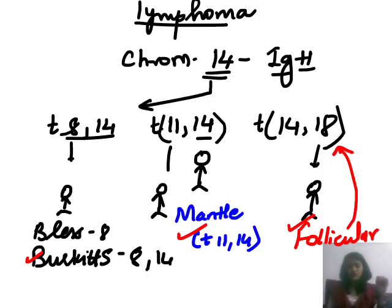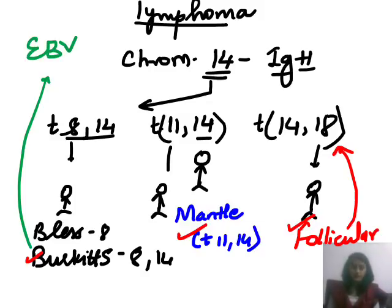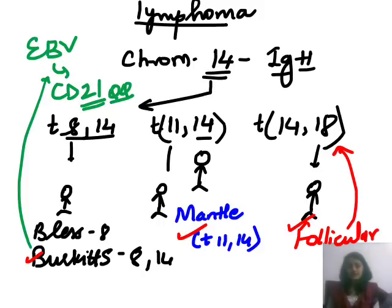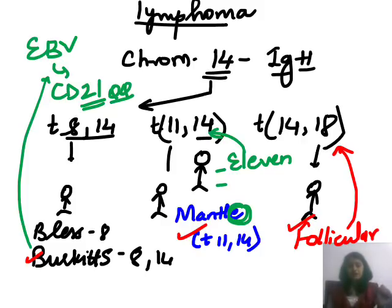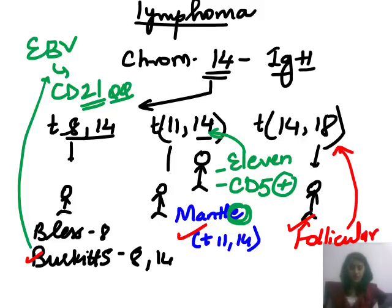Now for the CD markers: Burkitt's is associated with Epstein-Barr virus, whose receptor is CD21 — a frequently asked question. For mantle cell lymphoma, 'M' contains the letter 'E' which is the 5th alphabet, so it is CD5 positive. Remember that mantle cell lymphoma is CD5 positive.